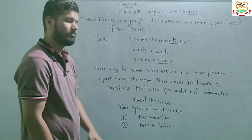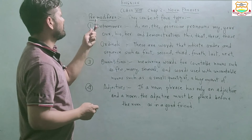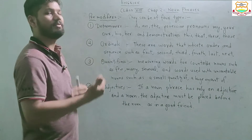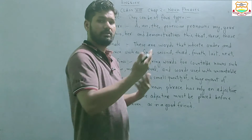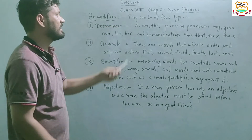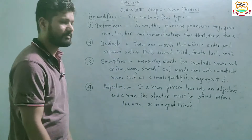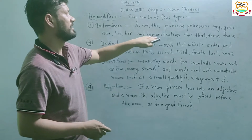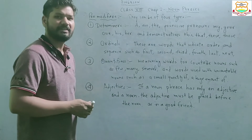Now we will learn about pre-modifiers and post-modifiers. As the name suggests, 'pre' means which comes before something. Pre-modifiers come before the noun in a noun phrase. They can be of four types. First one is determiners, like 'a' and 'the', which are articles. Also possessive pronouns such as 'my', 'your', 'his', and demonstrative pronouns like 'this', 'that', 'these', 'those'.